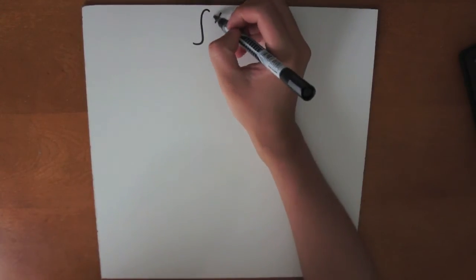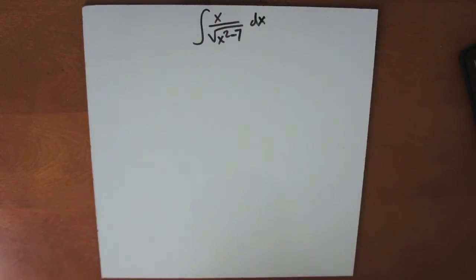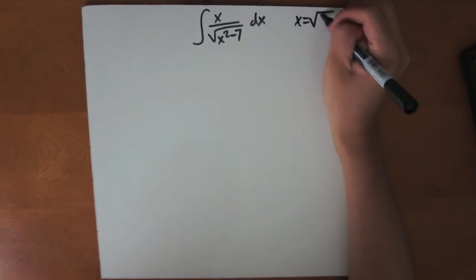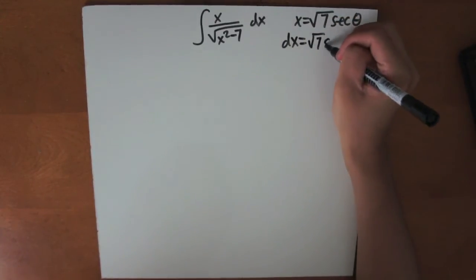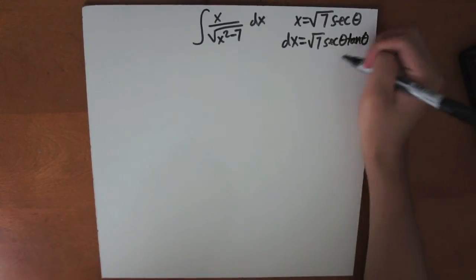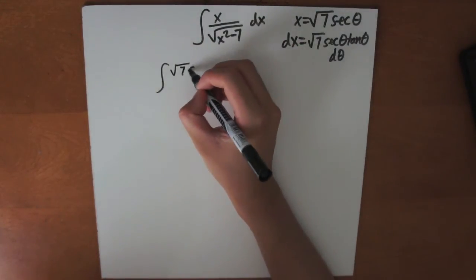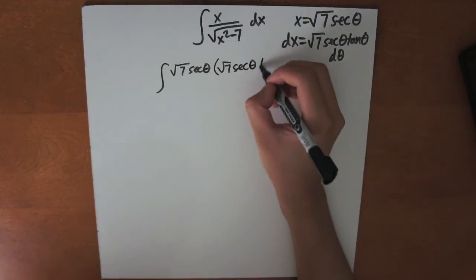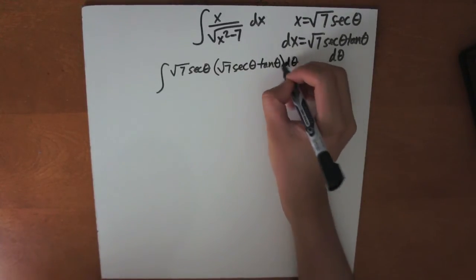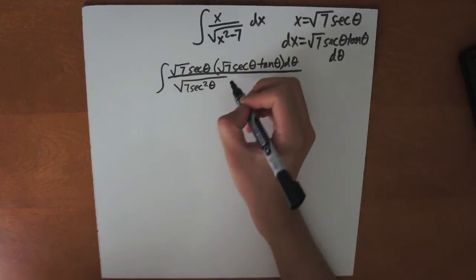So now let's try the integral of x over the square root of x squared minus 7 dx. We first realize we must use the substitution x equals the square root of 7 times secant theta. Therefore, dx equals the square root of 7 times secant theta tangent theta d theta. Plugging back in, we get the integral of the square root of 7 secant theta times the square root of 7 secant theta tangent theta d theta, over the square root of 7 secant squared theta minus 7.